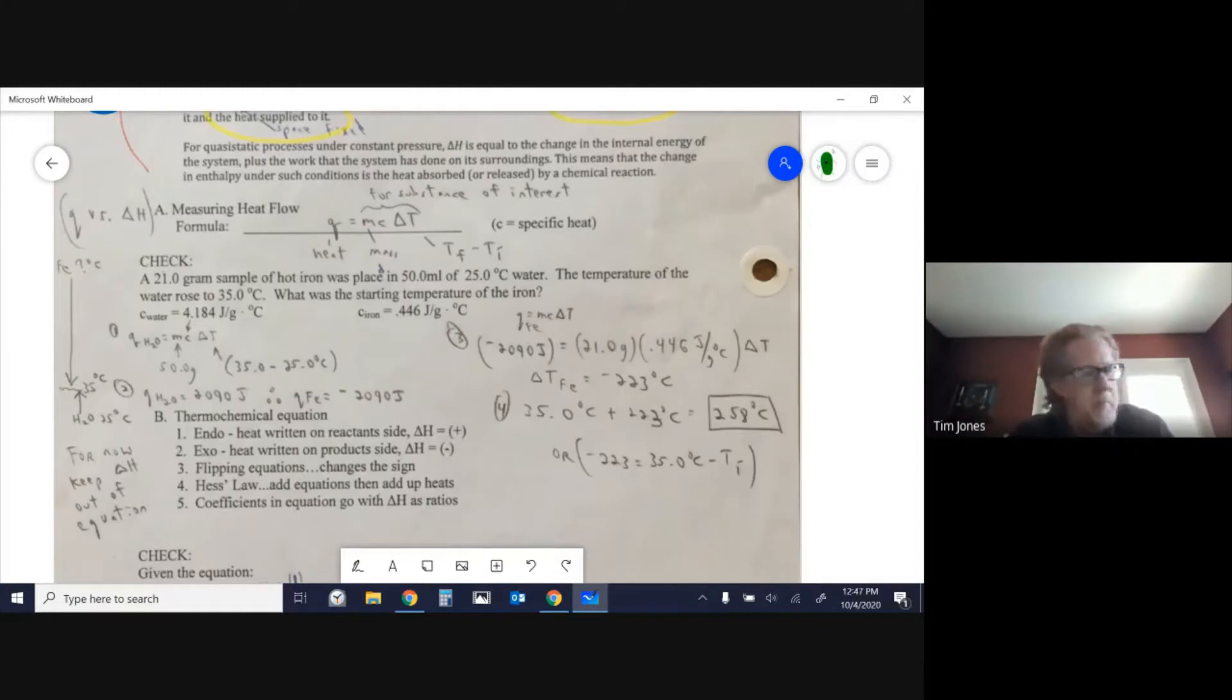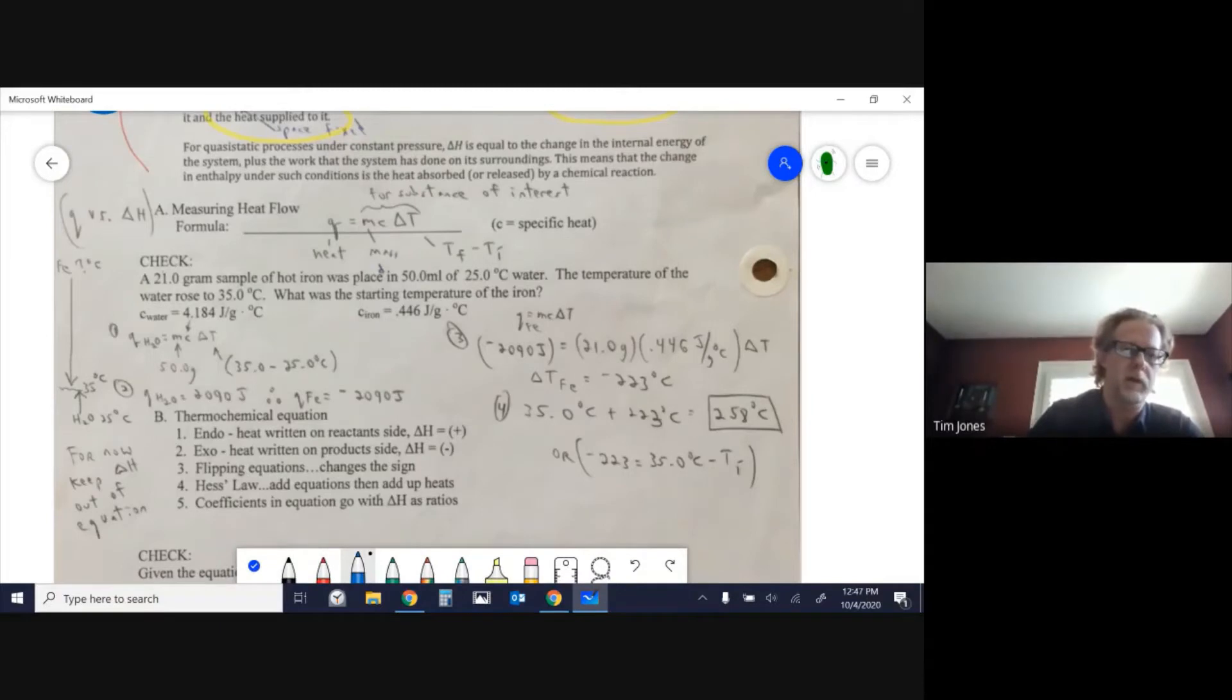Very roughly put, specific heat is how well something holds heat. Something that holds heat very well, like water, has a high specific heat. Something that doesn't hold heat well, like most metals, has a low specific heat. Water's specific heat is about 4; iron is about 0.4. Water is about 10 times better at holding heat; iron is about 10 times better at moving heat from one spot to another.